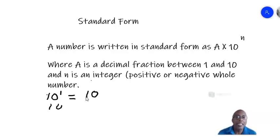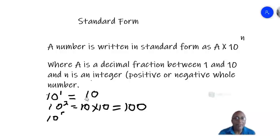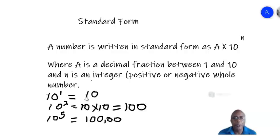If you have 10 squared, that is the same as 10 times 10, which is 100. So if you are multiplying by 10 squared, you bring the point forward two places — the same number as the index. And if you have 10 to the power of five, that is 10 multiplied by itself five times, which is one hundred thousand — five zeros, the same number of zeros as the index. So if you are multiplying by 10 to the five, you bring the point forward five places.